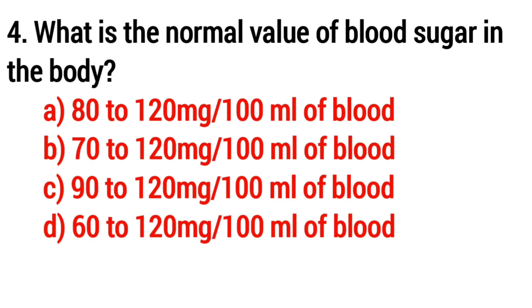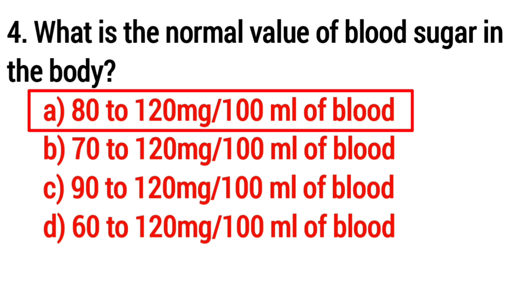Question 4: What is the normal value of blood sugar in the body? The answer is Option A: 80 to 120 mg per 100 ml of blood.